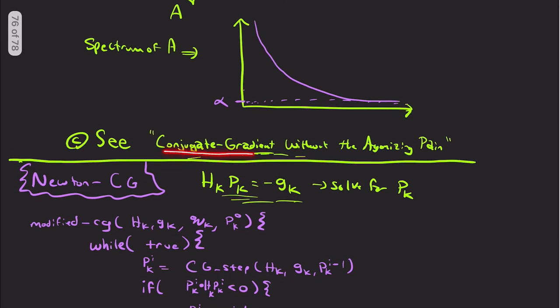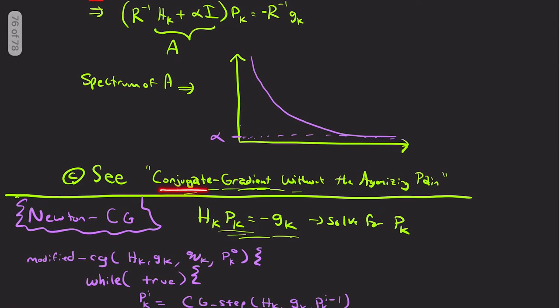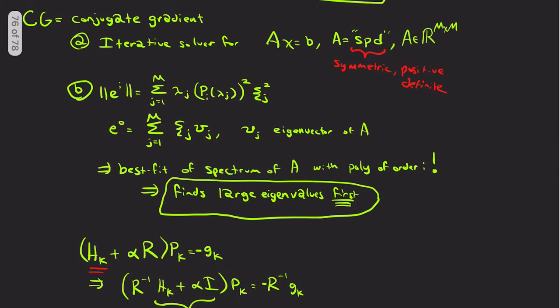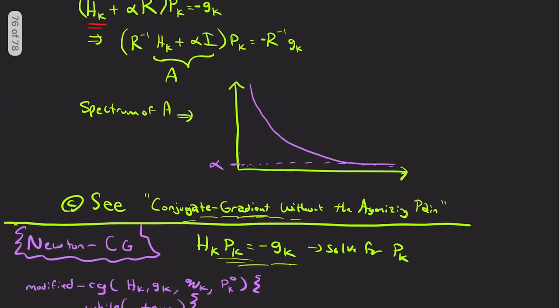So that being said, if this is all foreign to you with CG, you can see a detailed derivation of the actual CG algorithm in this source here, conjugate gradient without the agonizing pain. So I won't get into that here. You can just think of it as just a tool we're using. That's an iterative solver.